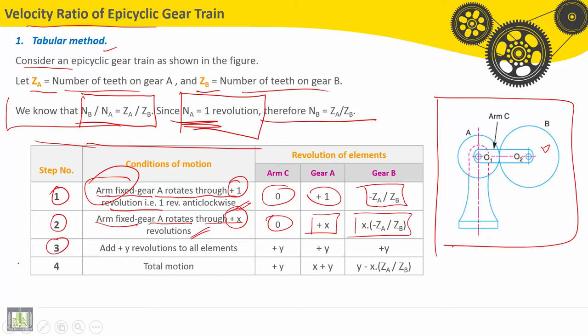In the third configuration, we will add plus Y revolutions to all elements. So we'll start by the arm here, plus Y. For gear A and gear B also plus Y.